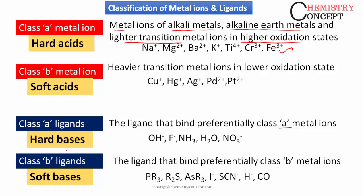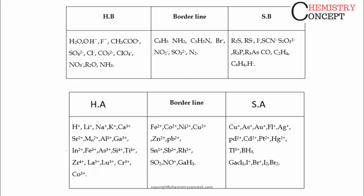Hard acids and hard bases means their electronic cloud cannot be easily polarized, while soft acids and soft bases means their electron cloud can easily be polarized. Here is a table showing examples of hard bases, soft bases, and borderline bases, and similarly hard acids, soft acids, and borderline acids — those which are intermediate to hard and soft. So basically, it is based on the electronic cloud — that is, how easily they can be distorted.